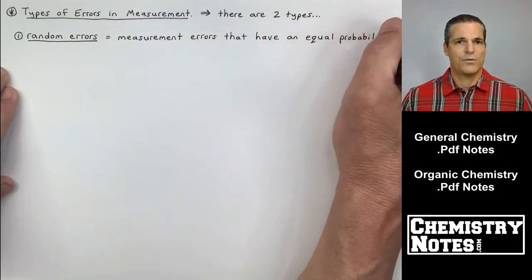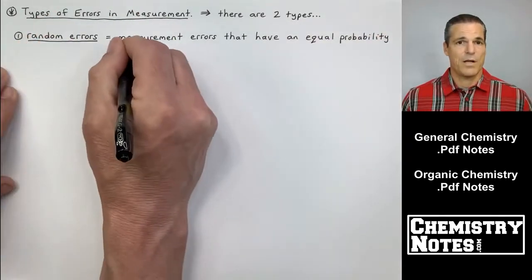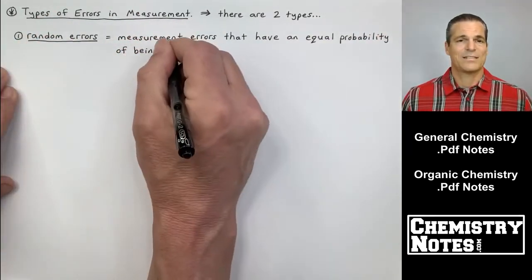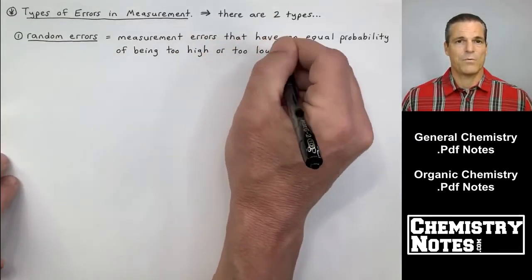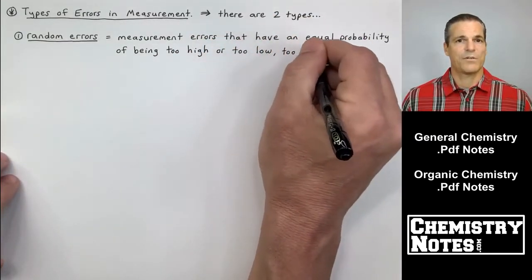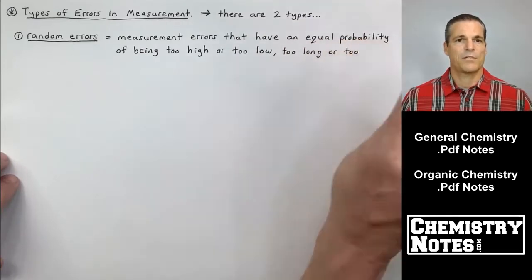this covers two topics. The first topic I'm starting to write down right now, types of error and measurement. And in the second half of this video, we'll start to talk about accuracy versus precision. All right, so let's get started.